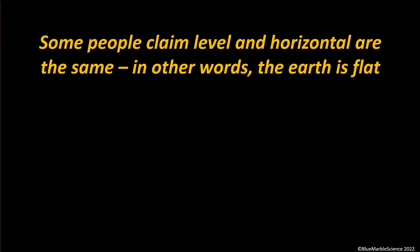Some people still claim that level and horizontal are the same thing — in other words, the earth is flat. They've become less willing to call themselves flat earthers. So they'll say things like, well, of course the earth's not flat, it has hills and valleys and things. Still, if you say level and horizontal are the same, you are by default claiming the earth is flat.